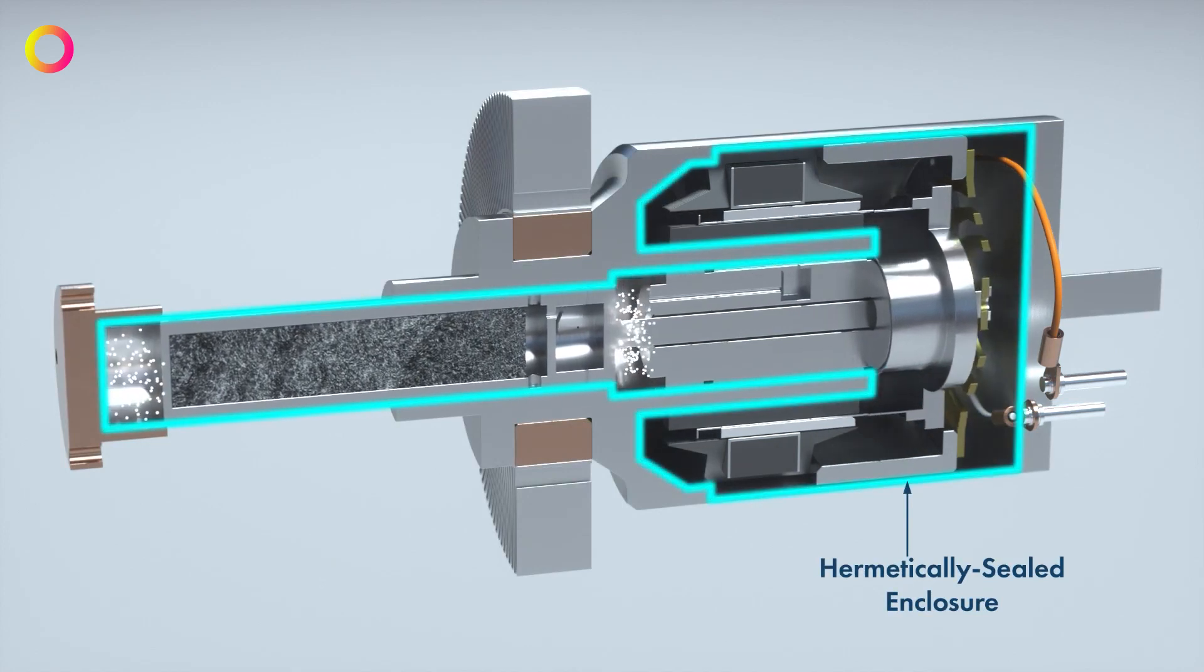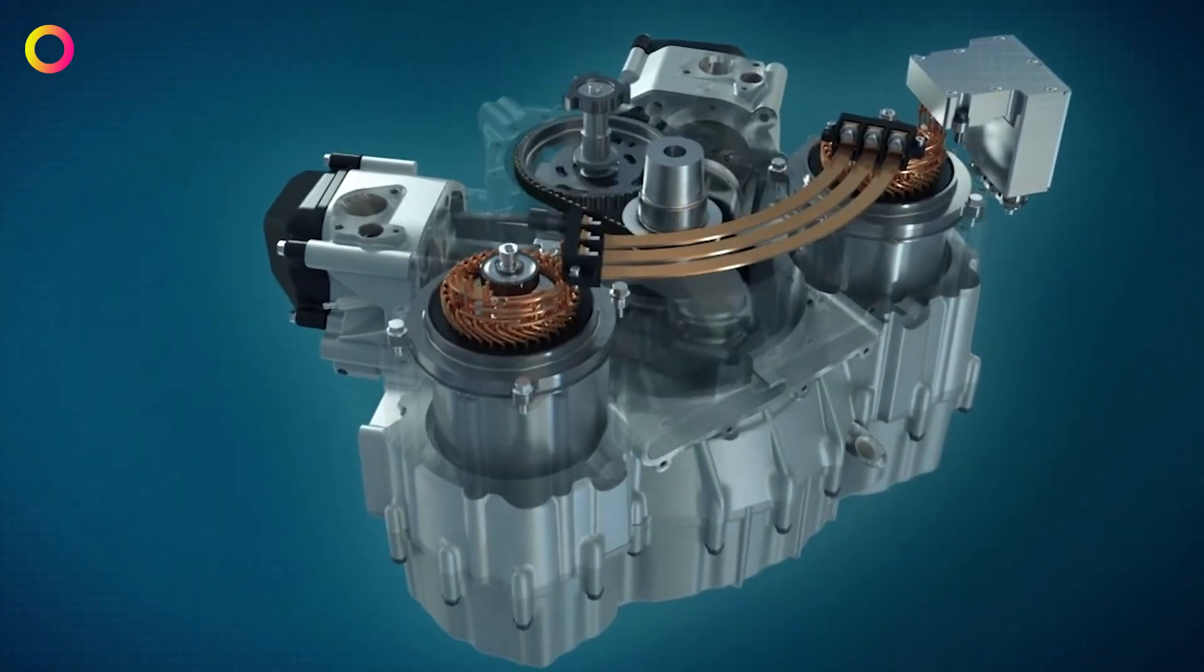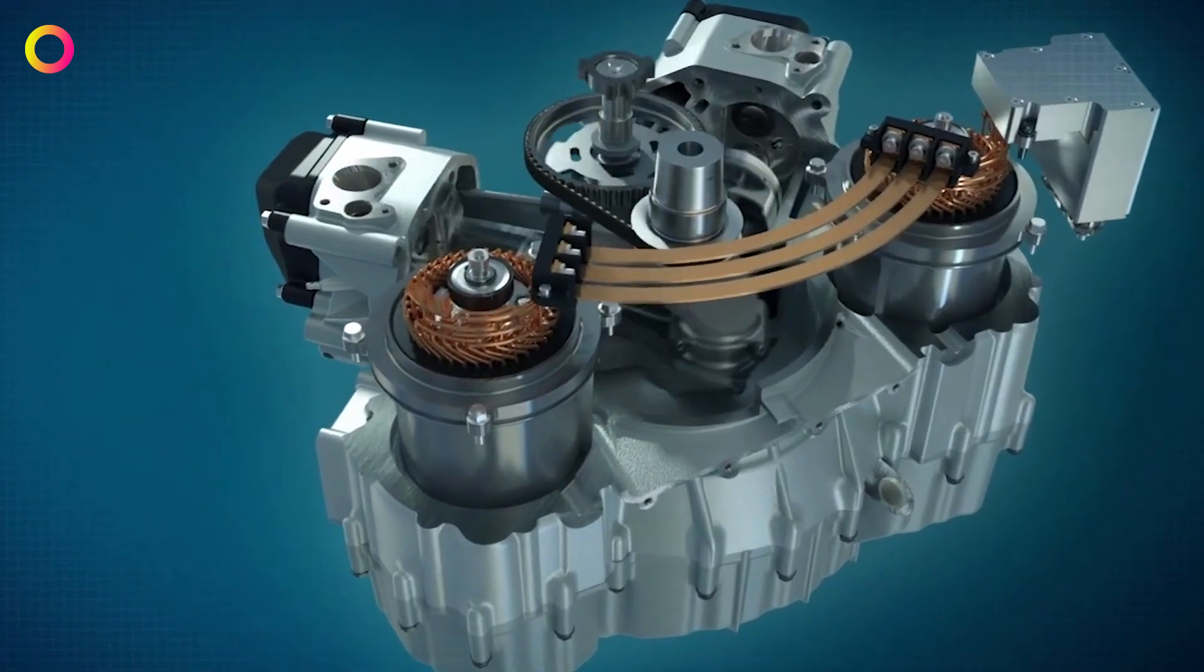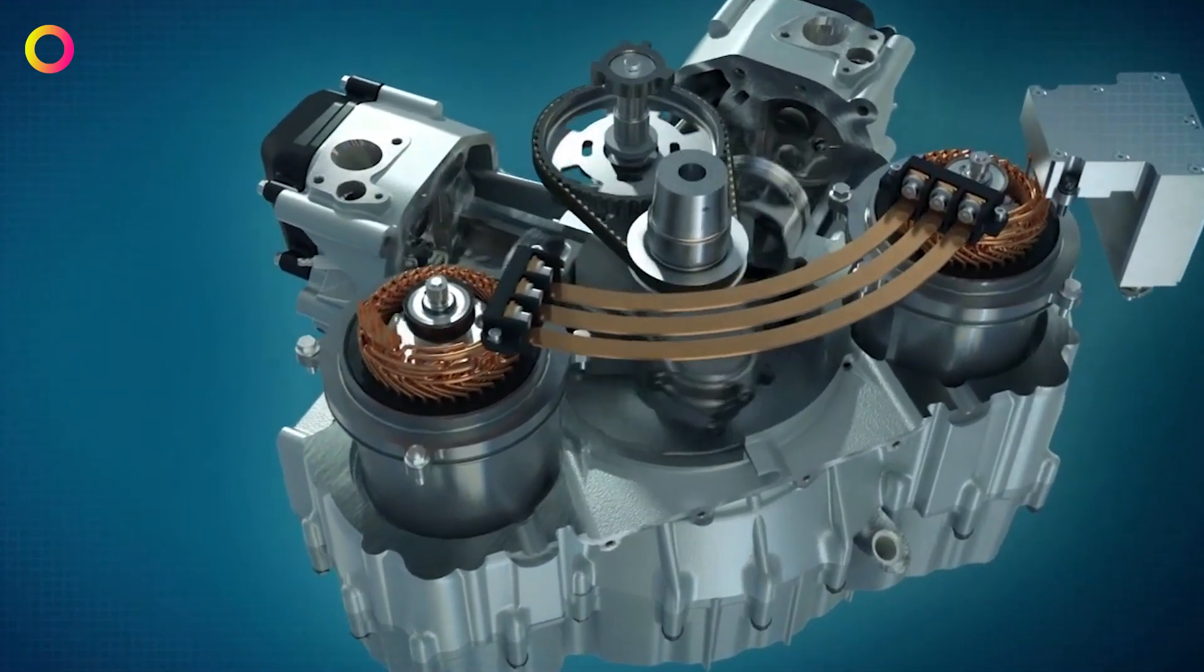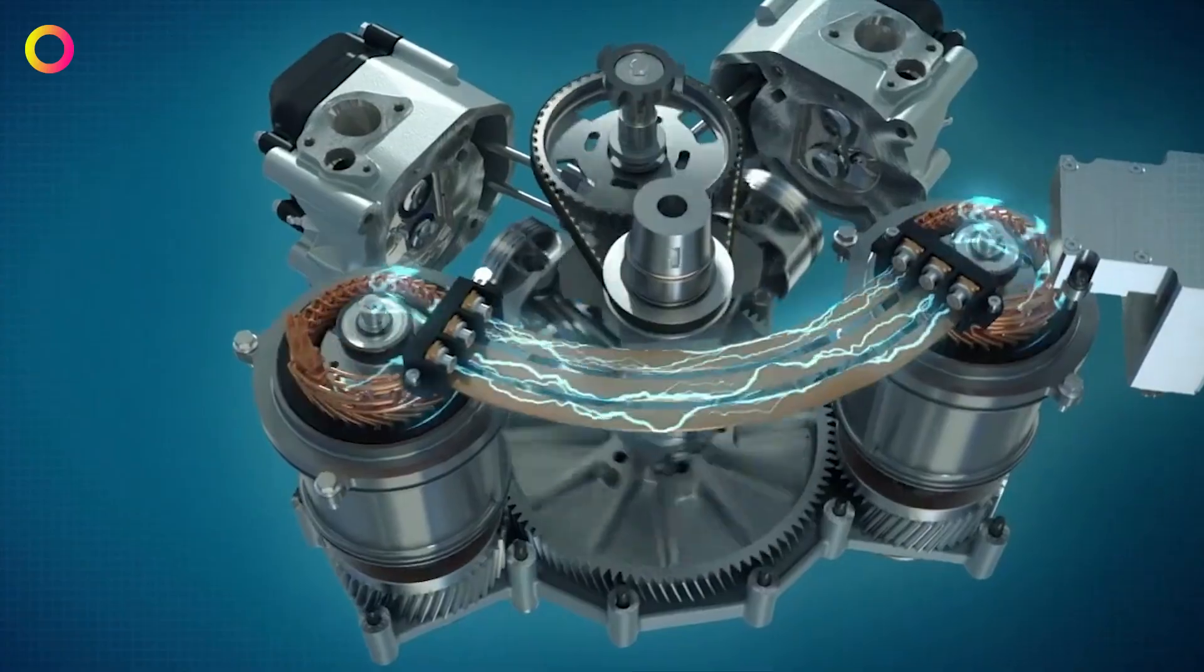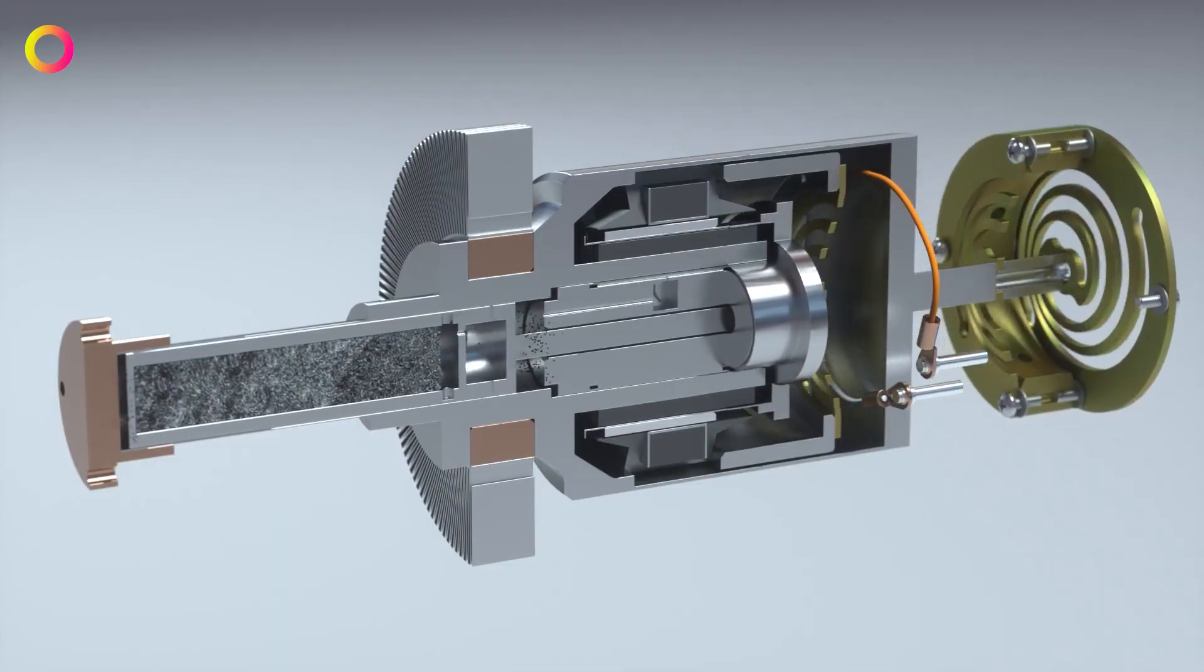The internal combustion engine drives the pistons. However, instead of converting the linear motion of the piston into the rotary motion of the crankshaft, as in a conventional engine, the device converts the kinetic energy of the piston directly into electricity, which is used to charge the batteries.